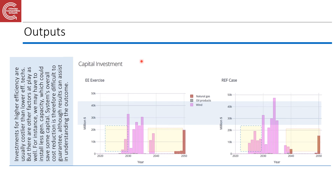Last but not least, another significant change we can see is in the capital investment comparison. Investment for higher efficiency technologies is usually costlier than for lower efficiency technologies, but there are other factors at play as well. For instance, we may have to install less generation capacity, which may save some capital investment. An overall cost reduction is therefore difficult to guarantee, and all results can assist in understanding the outcome. This exercise has demonstrated how to fit energy efficiency parameters into your model — good luck with your energy modeling!